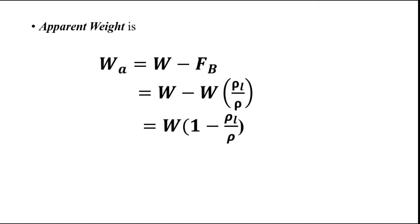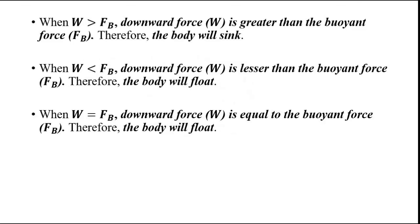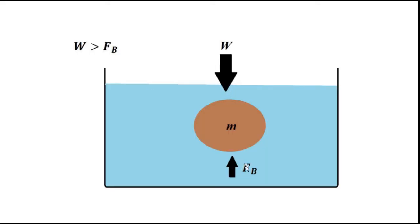What determines whether an object will float or sink in a liquid when it is released in a container filled with that liquid? It all depends on the weight of the object and the force of buoyancy. The first condition: when the weight of the object — the downward force — is greater than the upward-acting buoyant force, the downward force exceeds the upward force, and the object will sink in the liquid.